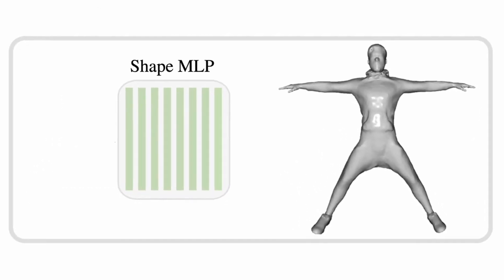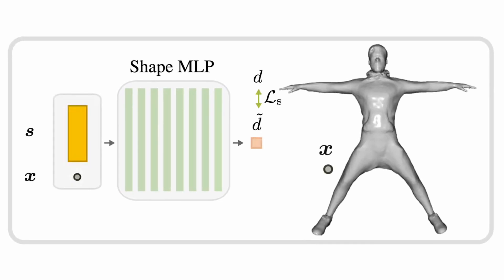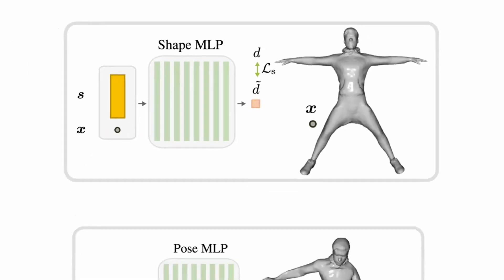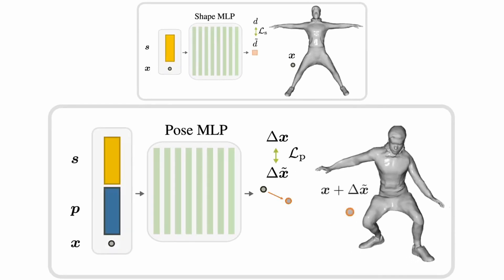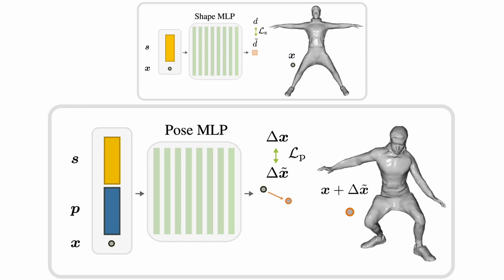The latent shape space, implemented as an autodecoder conditional on a shape code S, learns to implicitly represent different identities in their canonical pose by mapping a query point X to its SDF value. The latent pose space is conditional on both the identity's shape code and a pose code P, and learns a mapping from points around identities in their canonical pose to the corresponding point locations in the deformed pose.